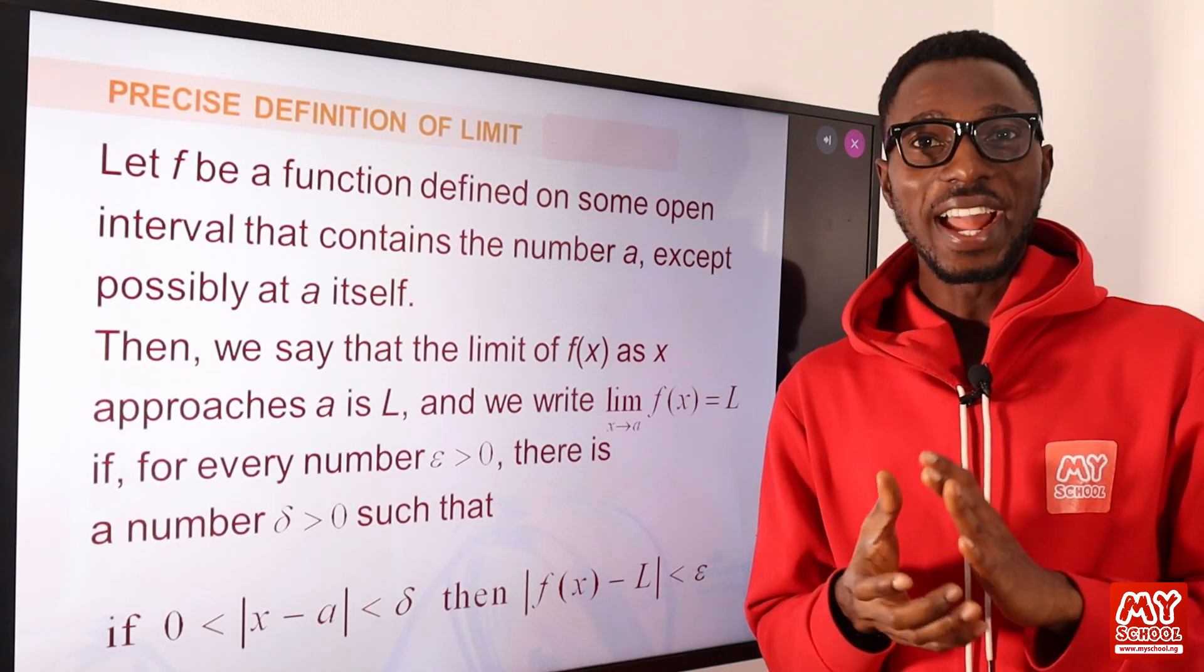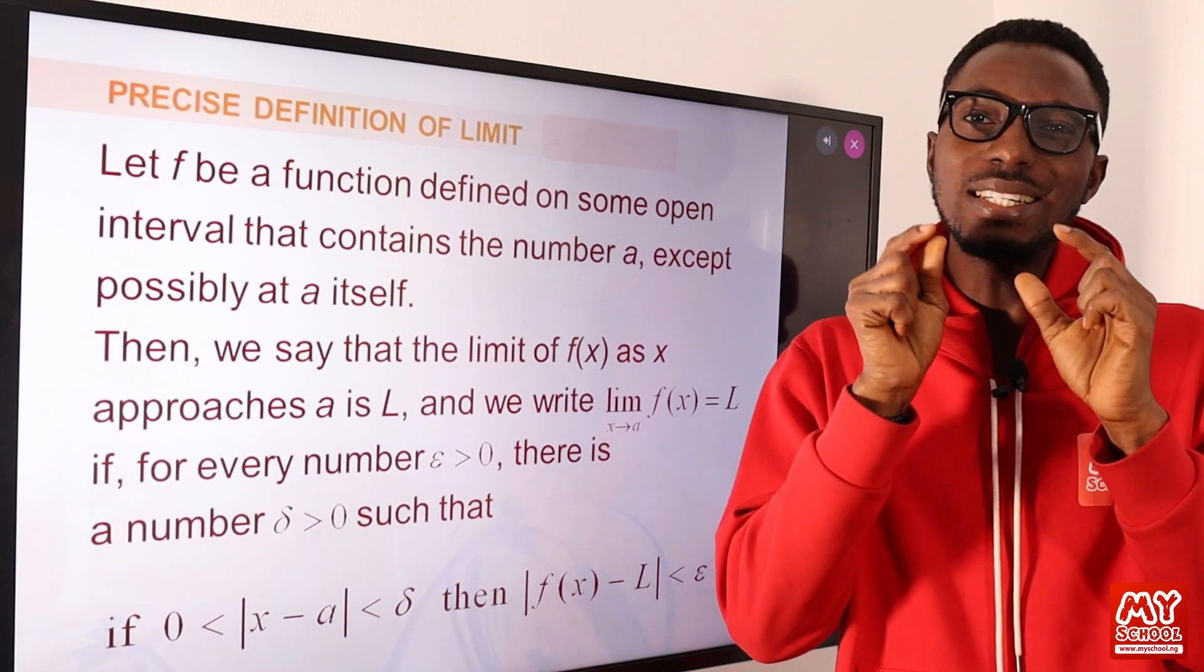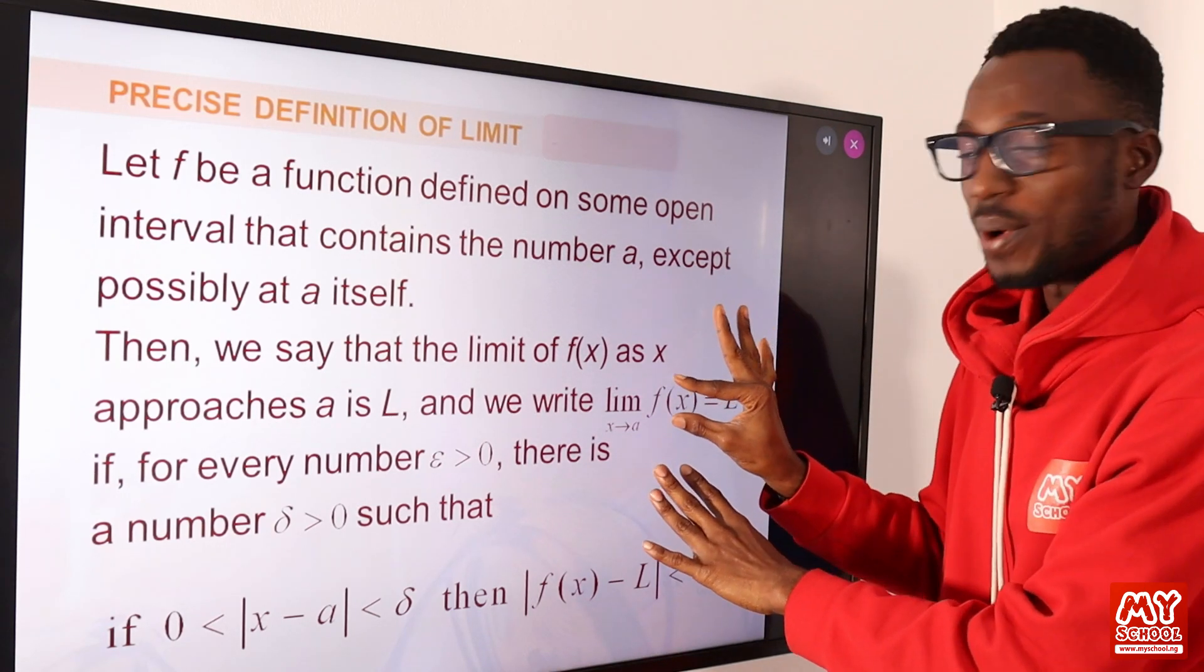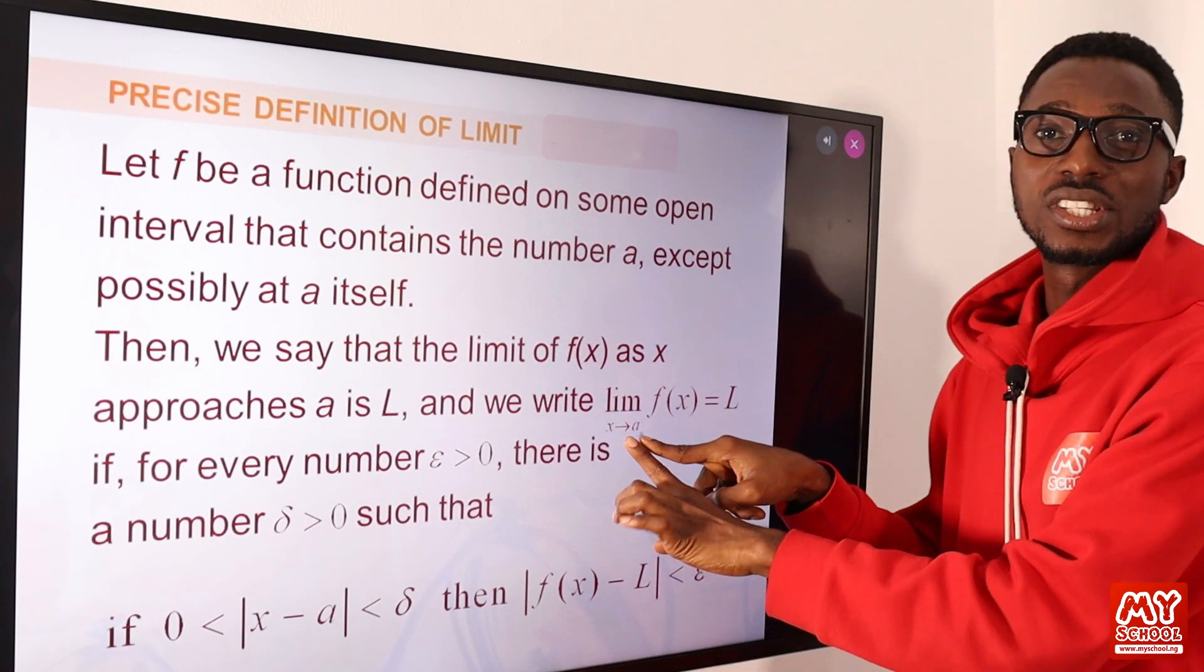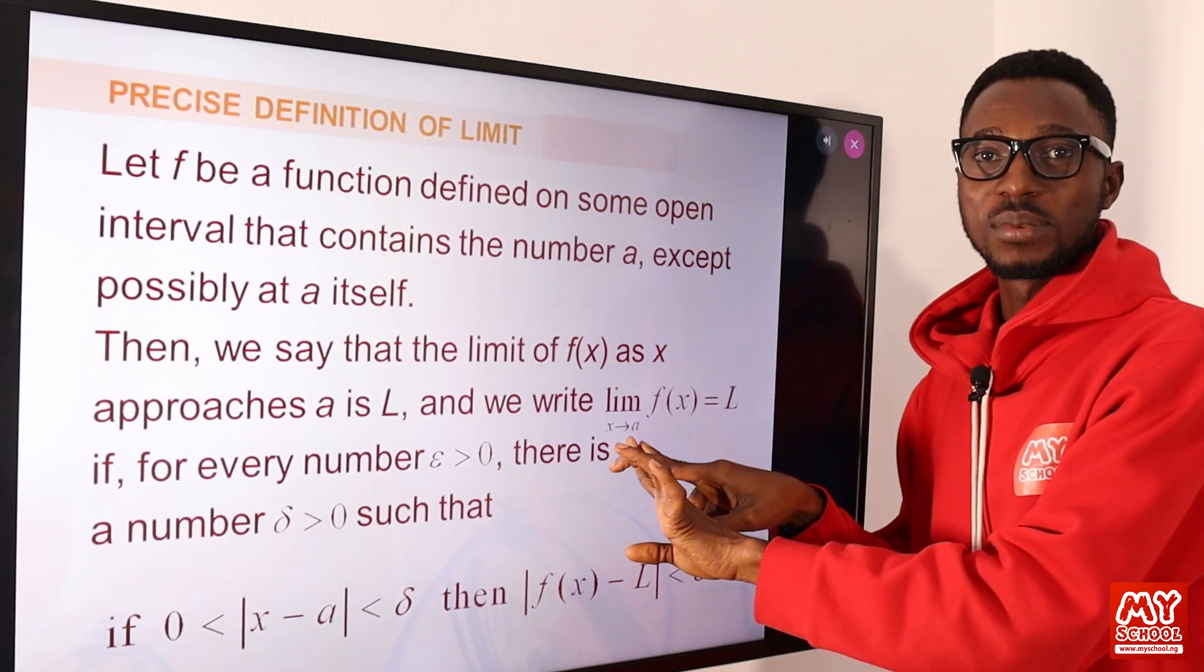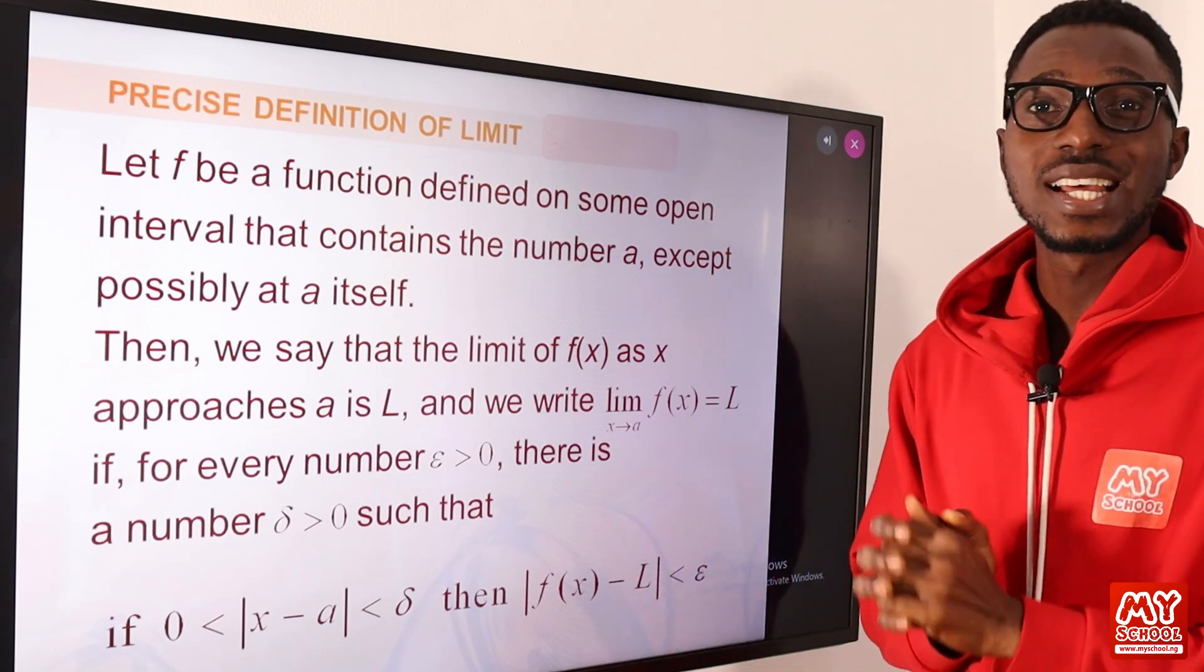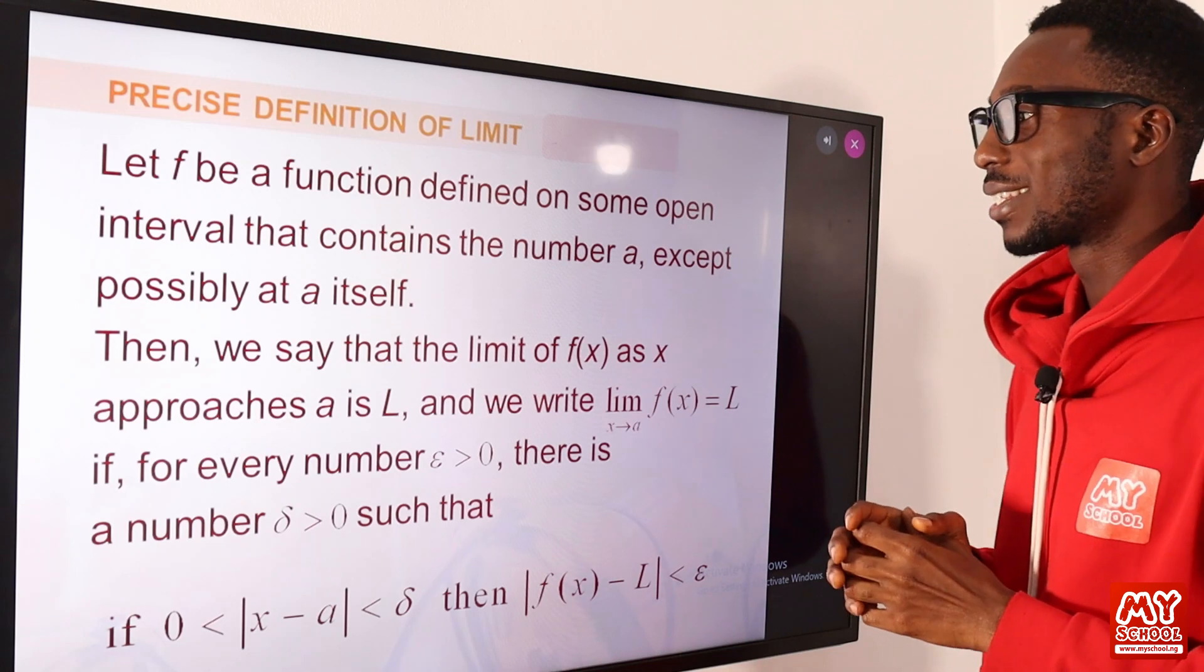How would you define limits? Limits can be simply defined as the approximate value of a function at a defined value of x. We are looking at the approximate value of this function at a defined value of x. The approximate value as x approaches a. This can be right sided or left sided. We are going to understand this concept better as we move further in the video.